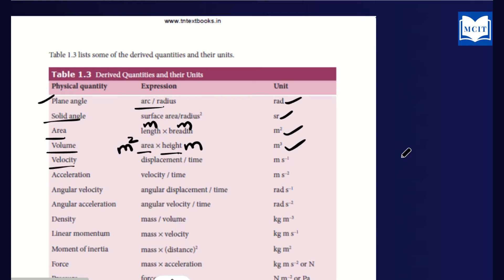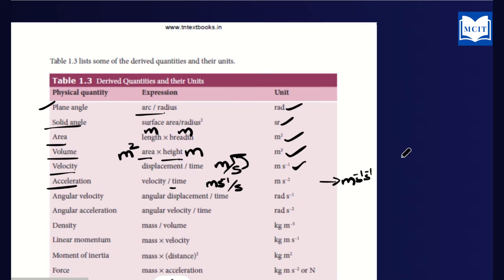If we choose length unit as m, then velocity is displacement divided by time — that is meter divided by second, written as m·s⁻¹.